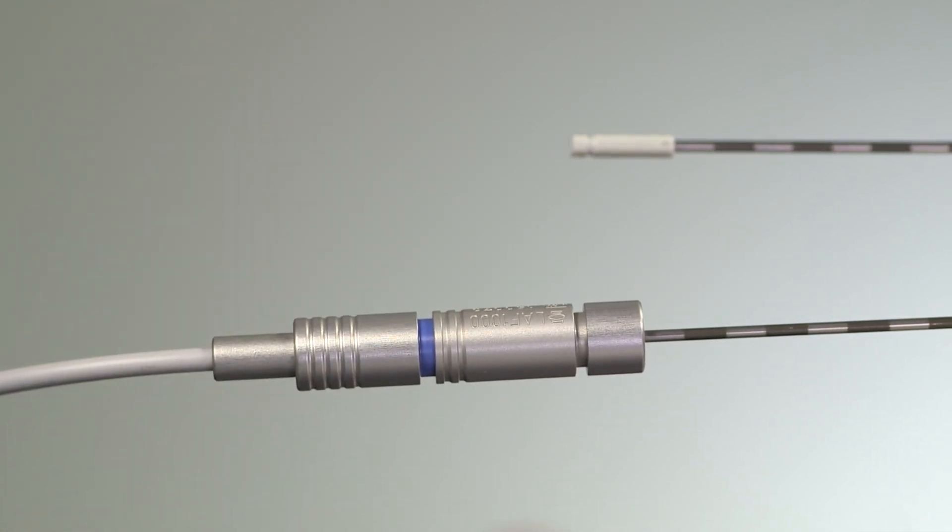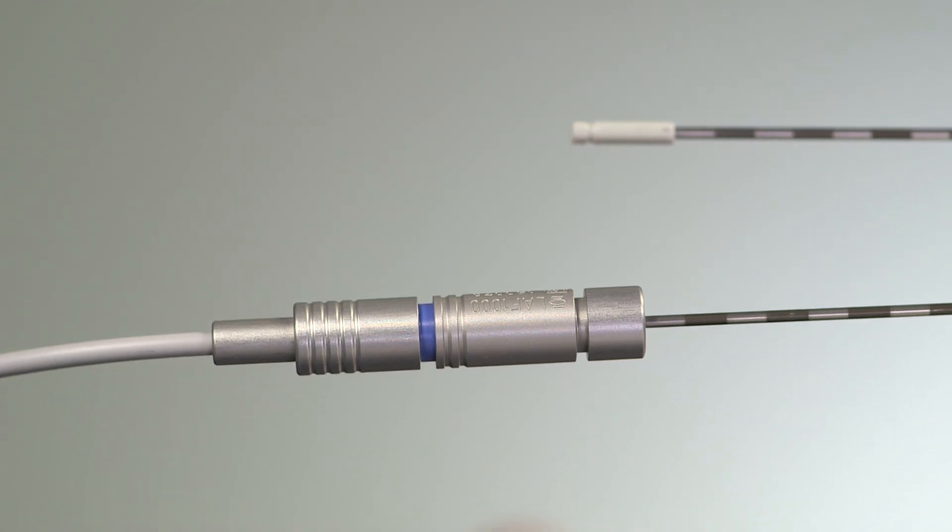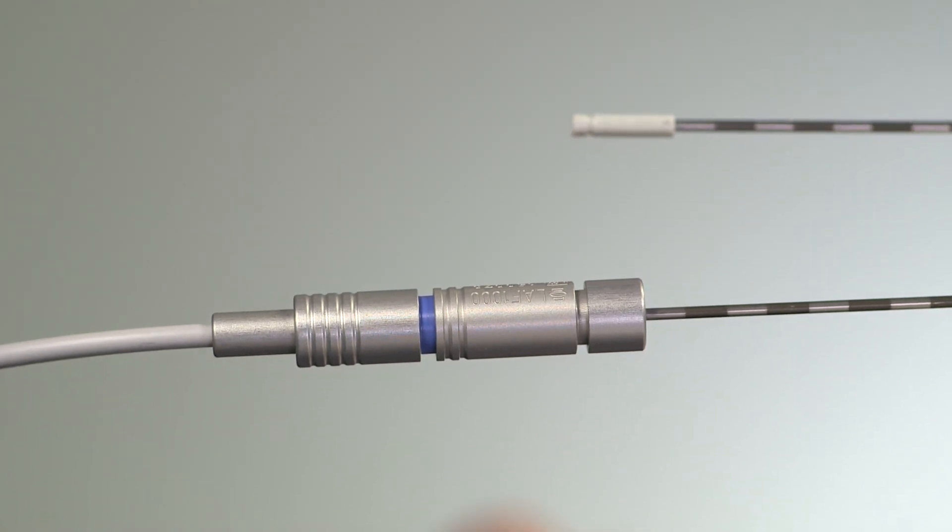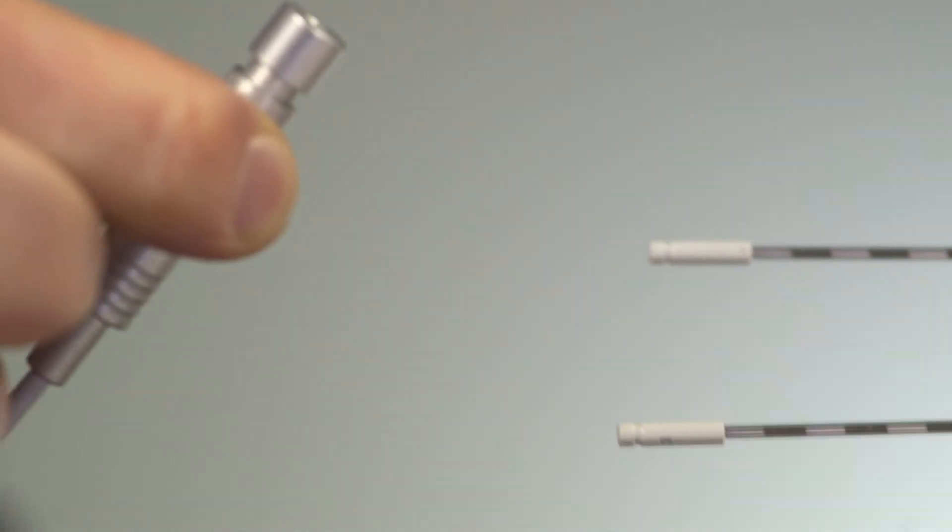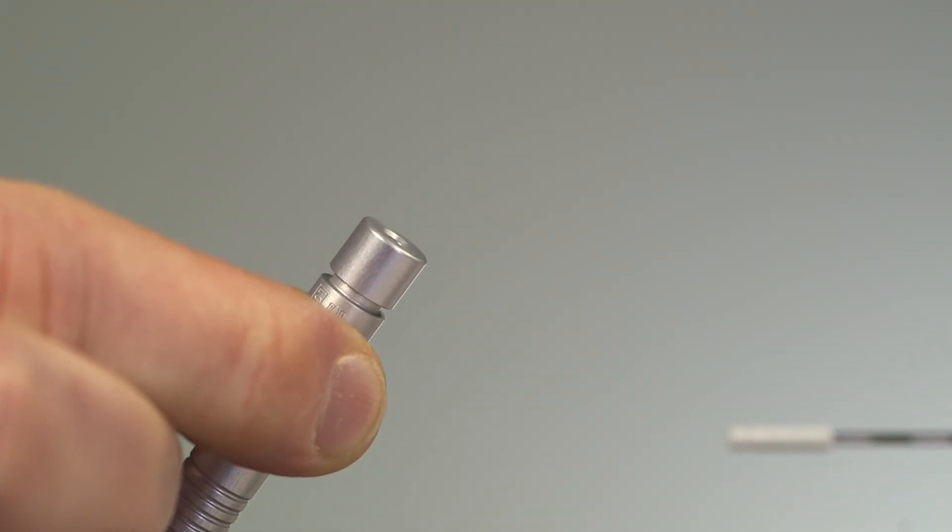If you hear and feel a click, you will know that the connection is secure. Removing the transfer tube is easy. Just pull gently at the middle ring. And note that pulling at the front will not release the transfer tube.